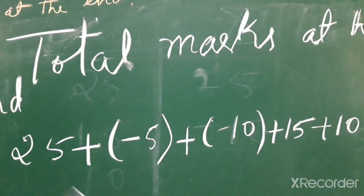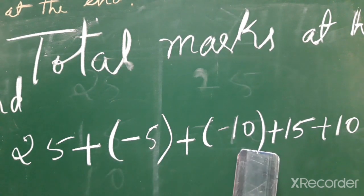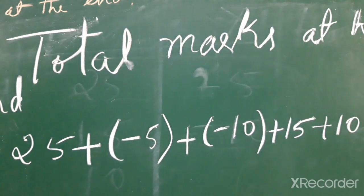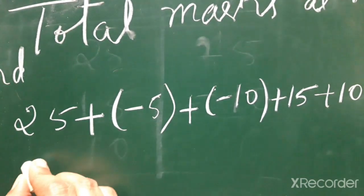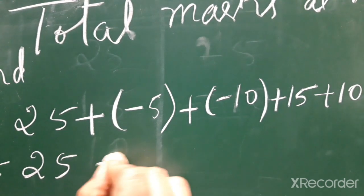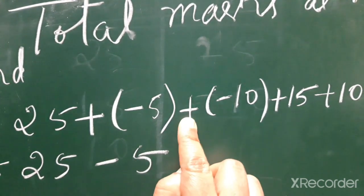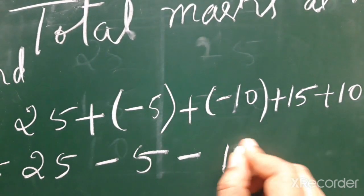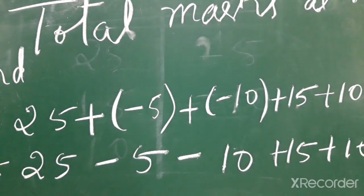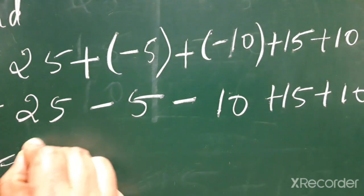Positive marks for correct answer and negative marks for wrong answer. Now we have to find the total at the end. The answer is 25 plus into minus is minus, so -5. Again plus into minus is minus, so -10, plus 15, plus 10. Now equals 25 -5 -10, plus 15, plus 10.